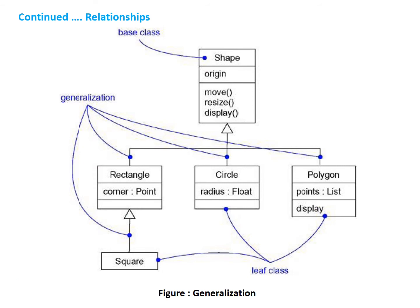A class may have zero or more parents. A class that has no parents and one or more children is called a root class. In this figure, if you observe, the Shape class has no parent class but it has three child classes. Therefore, we call the Shape class the base class or the root class. Similarly, Rectangle, Circle, Polygon, and Square classes have no children. Therefore, we call these classes the leaf classes.